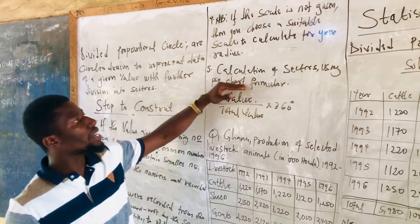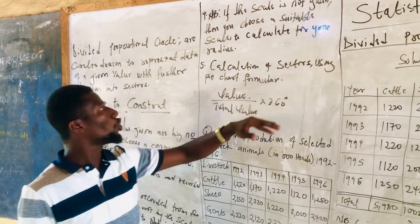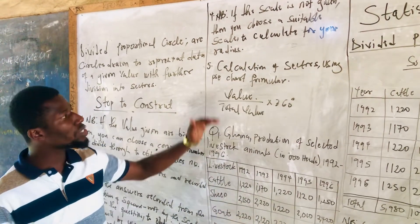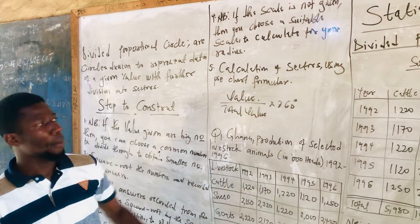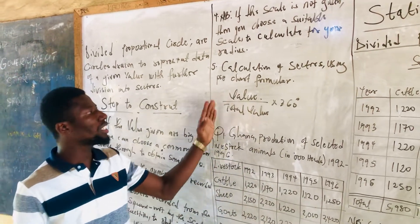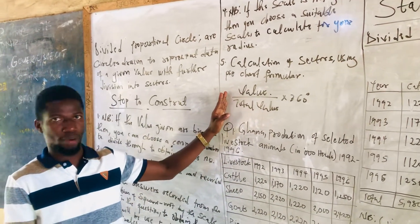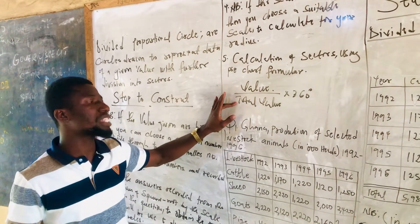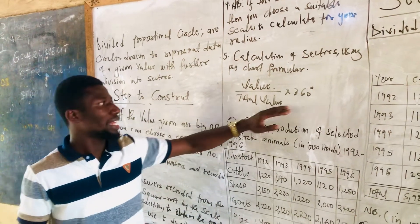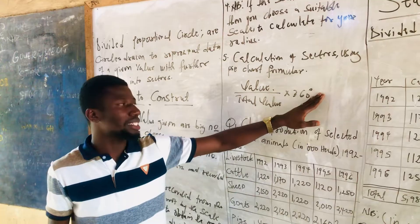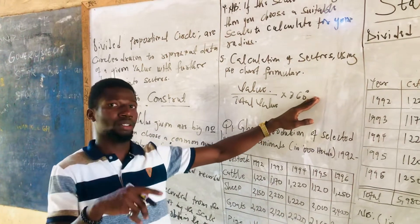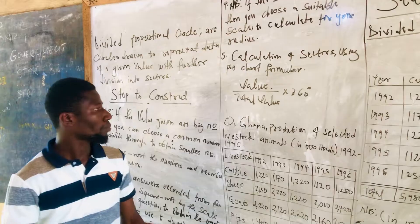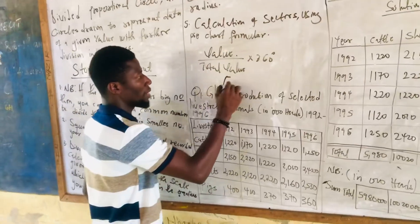Step 5: calculate the sectors using the pie chart formula. We use the pie chart formula because the value divided by the total value times 360 degrees gives the sector angle. It is times 360 because the circumference of a circle is equivalent to 360 degrees.